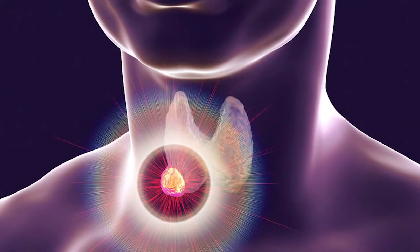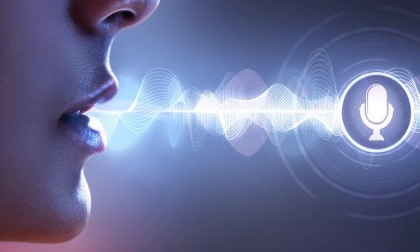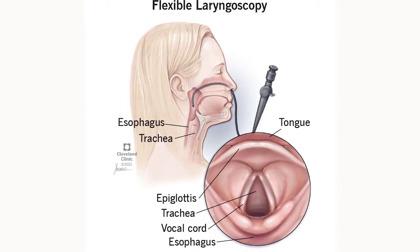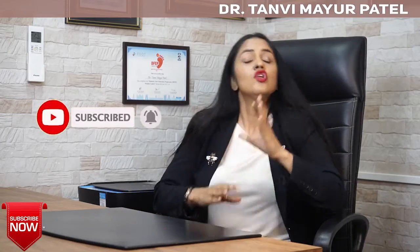Many people with thyroid cancer can also have a disturbance in their voice, which happens because an enlarging nodule compresses the vocal cord area. In that situation, we do a laryngoscopy to find out the status of your voice. This laryngoscopy is also helpful in deciding the kind of treatment to be given. These are the certain scans and tests we do to find out about thyroid cancer.